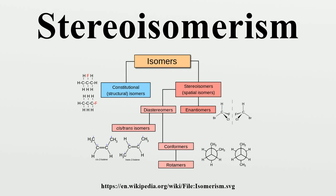Stereoisomers are isomeric molecules that have the same molecular formula and sequence of bonded atoms, but differ in the three-dimensional orientations of their atoms in space. This contrasts with structural isomers, which share the same molecular formula but the bond connections or their order differs. By definition, molecules that are stereoisomers of each other represent the same structural isomer.